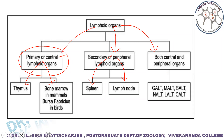This is the broad classification of the different categories of lymphoid organs. The primary lymphoid organs are basically the sites where lymphocytes develop and mature. The T cell precursor comes from the bone marrow but fully develops in the thymus. That is one category of the primary lymphoid organs.